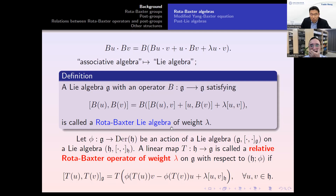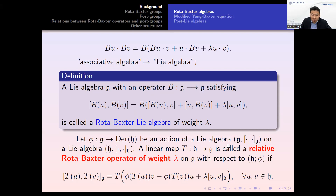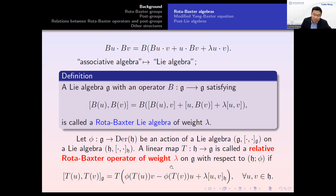In the sequel we will need a more general notion: relative Rota-Baxter operator. Here 'relative' means relative to an arbitrary representation or action. Let phi from G to Der(H) be an action of a Lie algebra G on a Lie algebra H. Then a linear map T from H to G is called a relative Rota-Baxter operator on G with respect to this action if the following equality is satisfied. Comparing the two equations, we only replace the Lie bracket by this arbitrary action or representation.